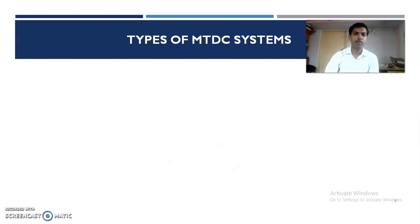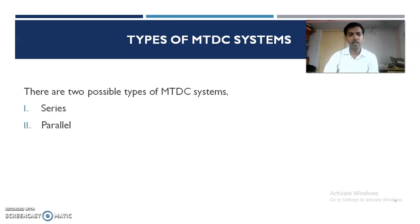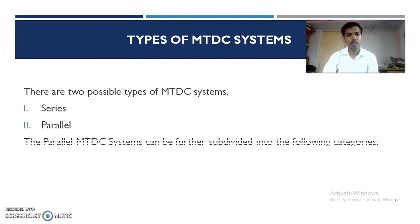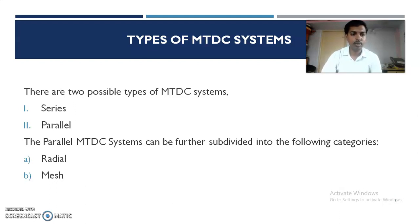Regarding types of MTDC systems, there are two types: first is series, and second is parallel. The parallel type connection is further divided into subparts, that is radial and mesh.